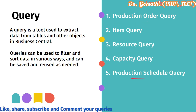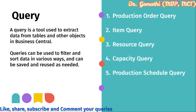For queries, the possible ones we can create are: production order query, item query, resource query, capacity query, and production schedule query. The production order query provides information about production orders such as order number, item number, start and end date, and quantity produced. The item query provides information about items used in the production process such as item number, description, unit of measure, and inventory level.